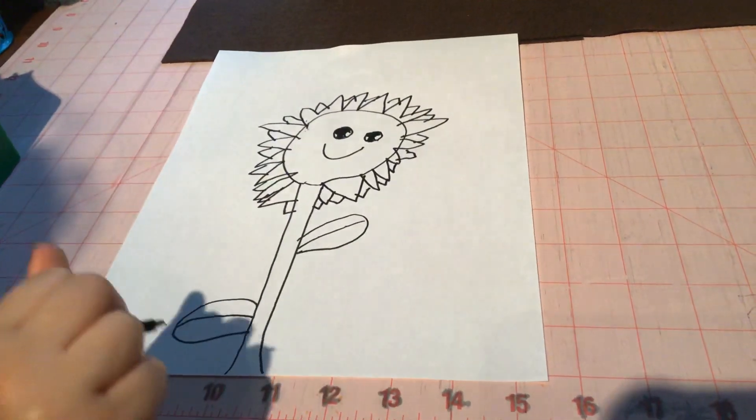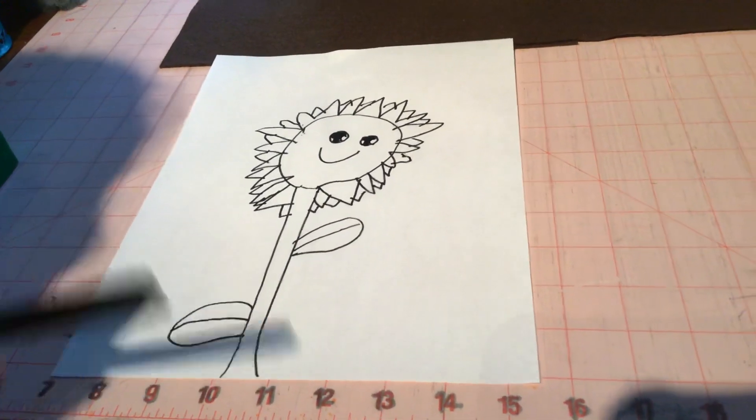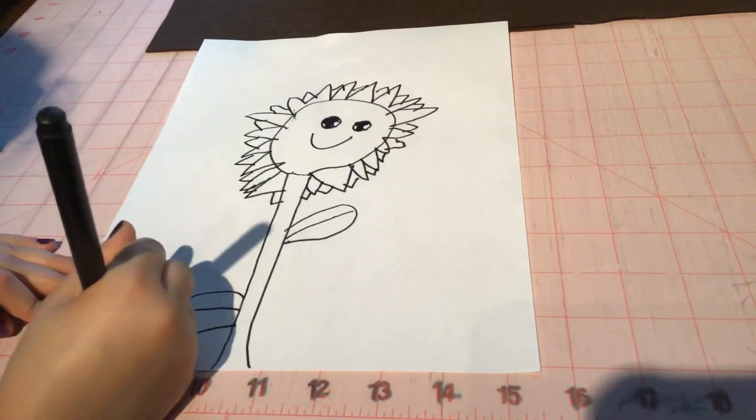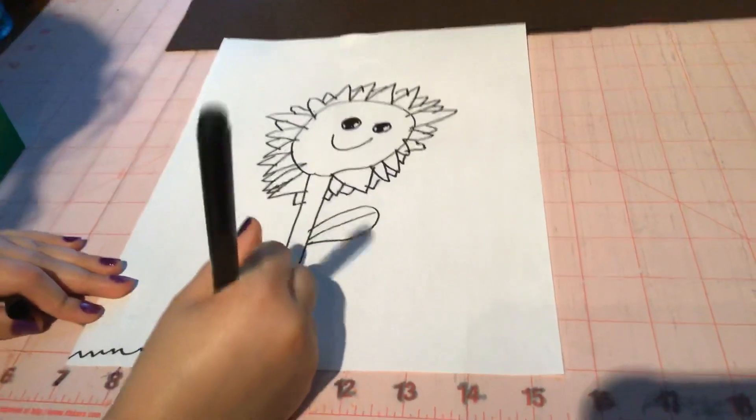Then we're done drawing our sunflower. And now if you want to add grass you just make it like little pointy wavy lines.